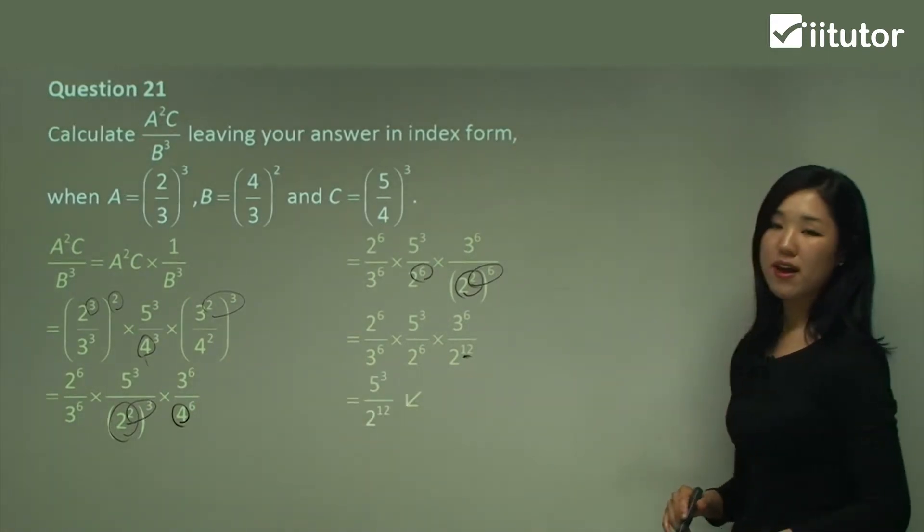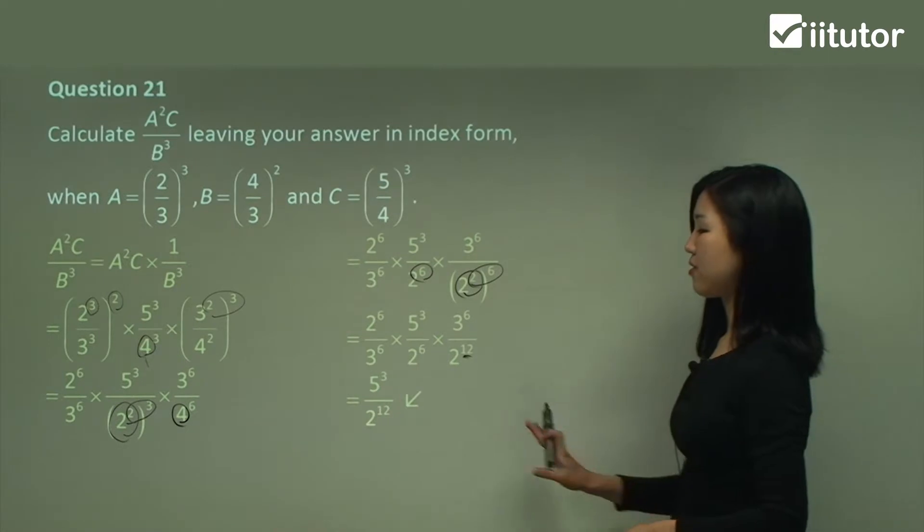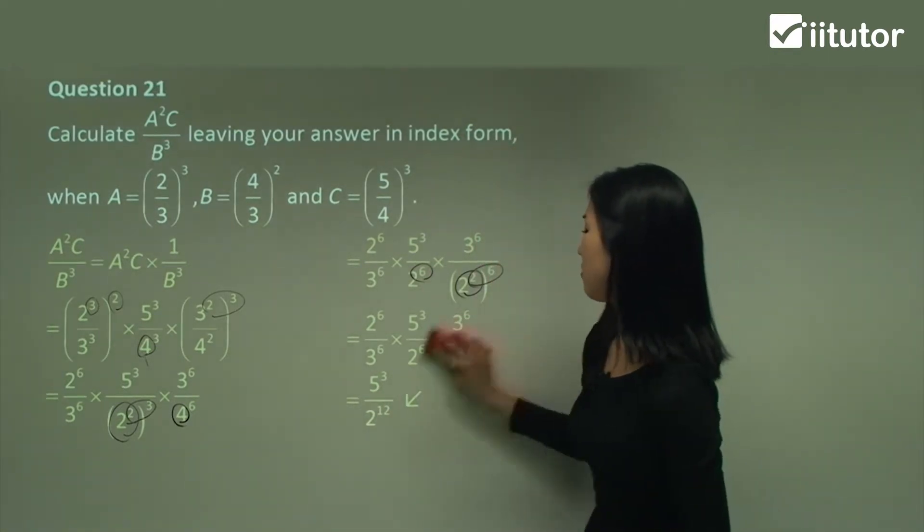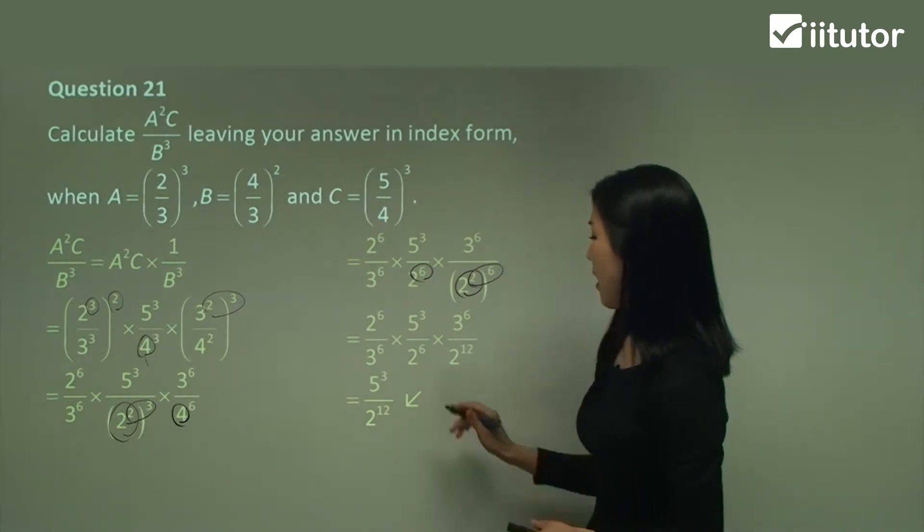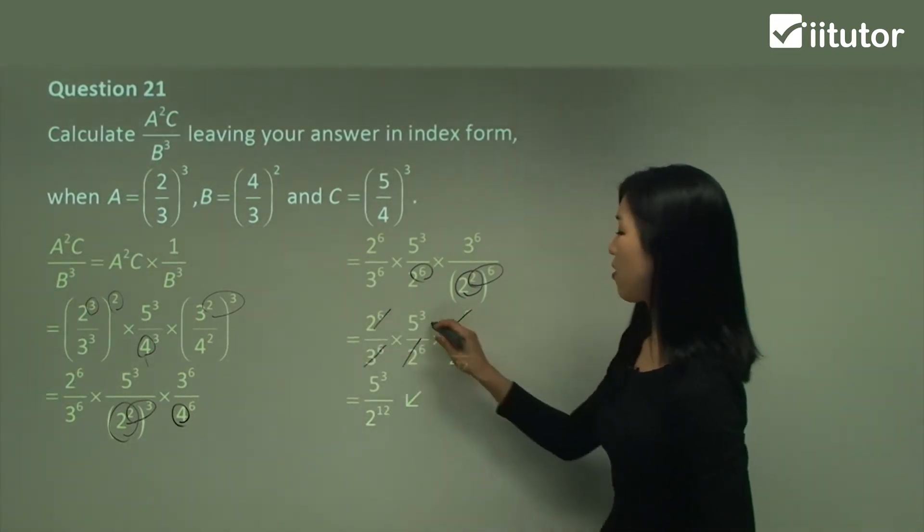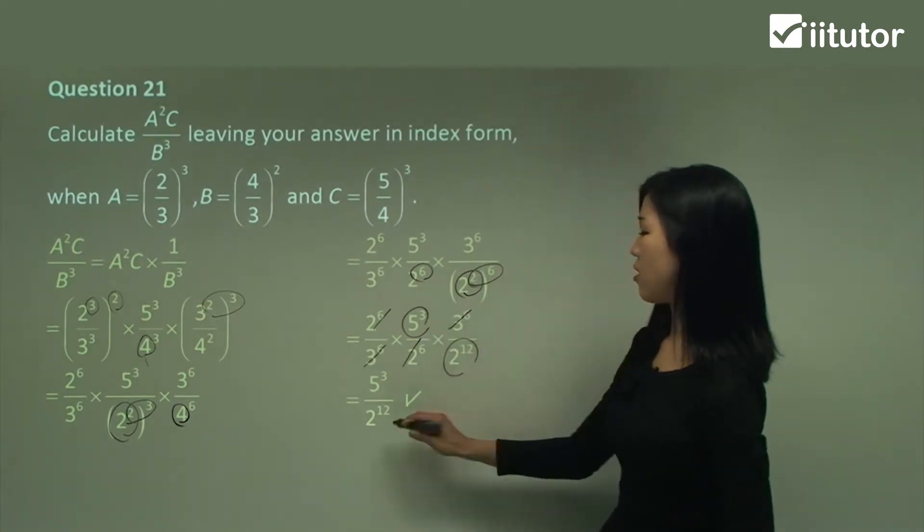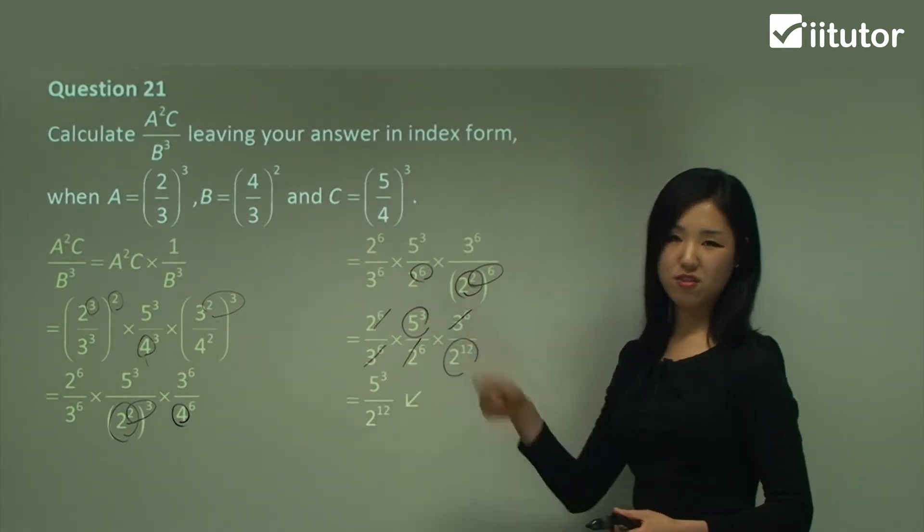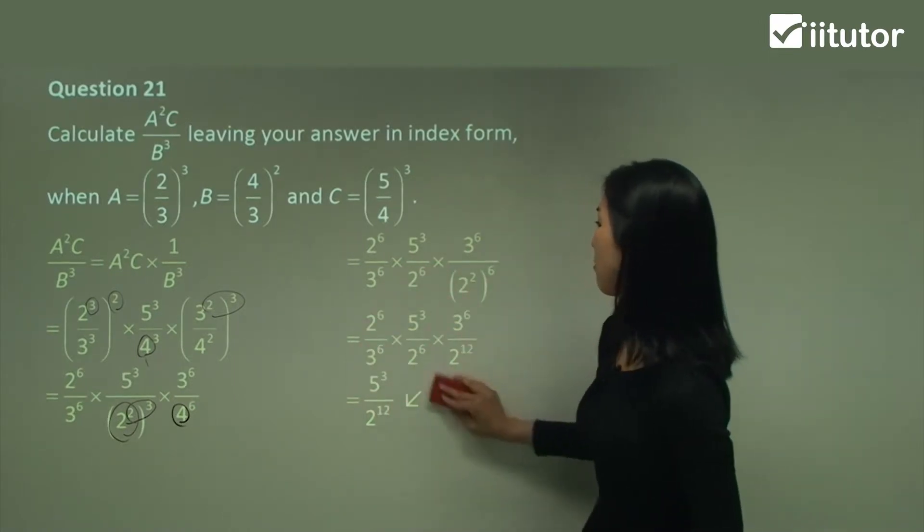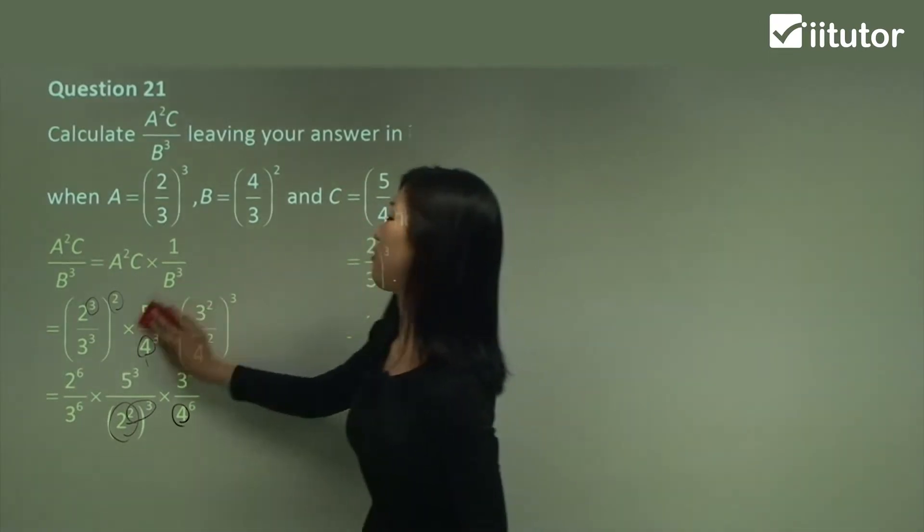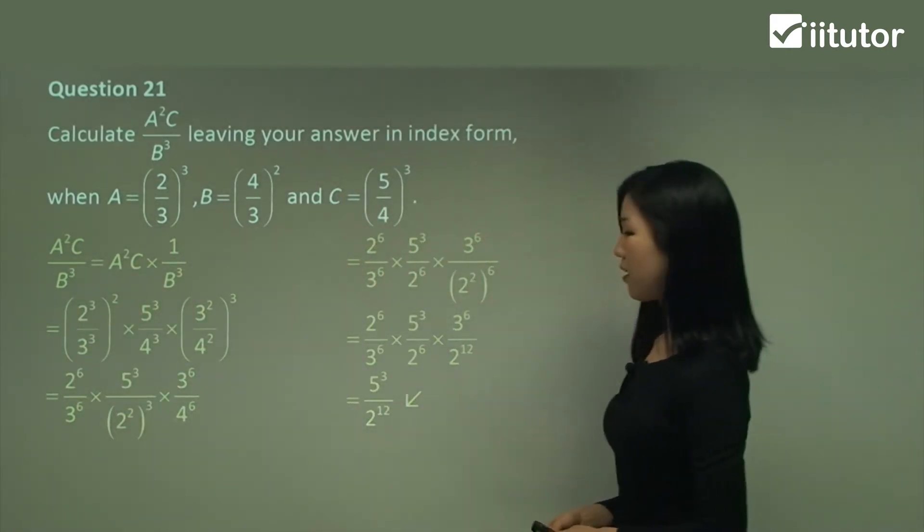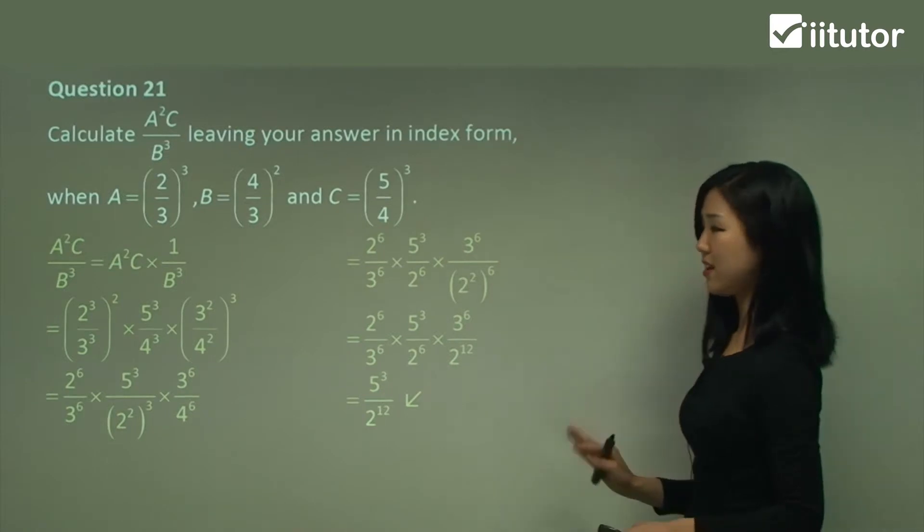So now what we can do is simplify it by cancelling everything out. So that will be your final answer. For those who need a little bit more working out, you can see that these cancel out, these cancel out, and that's why we just have the 5 cubed over 2 to the 12. So you can just cancel out. That's always the fun part. And you can just leave it like that because the question says answer in index form. So you don't have to worry about putting it into your calculator and simplifying it. So no calculator is needed here.